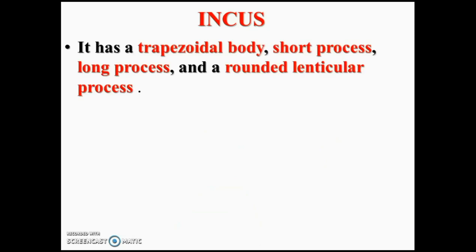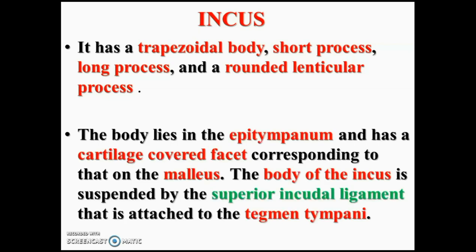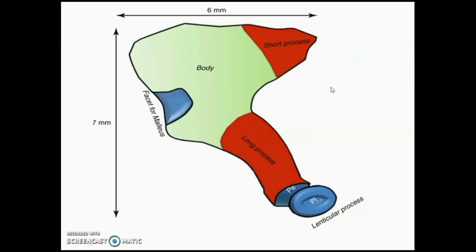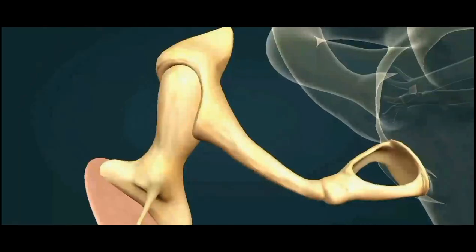The next ossicle is the incus. The incus has a trapezoid body with a short process, long process, and a rounded lenticular process. Like the head of the malleus, the body also lies in the epitympanum. It has a cartilage-covered elliptical facet for the head of the malleus. The body of the incus is suspended by the superior incus ligament from the tegmen tympani. You can see the trapezoidal body and two processes — short and long — at right angles. From the long process you will see one more process, the lenticular process.